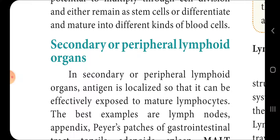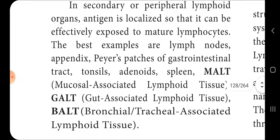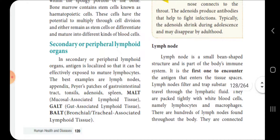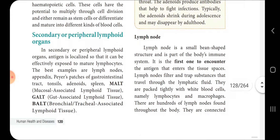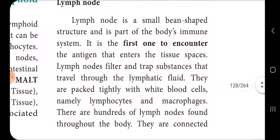Other examples include Peyer's patches of the gastrointestinal tract, tonsils, adenoids, spleen, MALT (mucosal associated lymphoid tissue), GALT (gut associated lymphoid tissue), and BALT (bronchial associated lymphoid tissue). These are the best examples of secondary lymphoid organs.